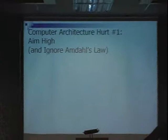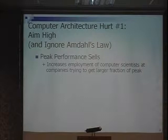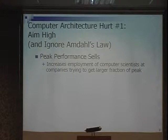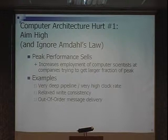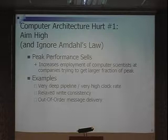Architecture bad thing number one: aim high and ignore Amdahl's law. Basically, peak performance is what sells, plus more jobs for us to try and get that performance out — to get a fraction of that peak performance. Examples of that: very deep pipelines, very high clock rates, relaxed write consistency — that's something that computer scientists invented that have made the world more difficult for everybody else. Out-of-order message delivery is another one of those things that makes programming even more challenging to try and achieve that peak.